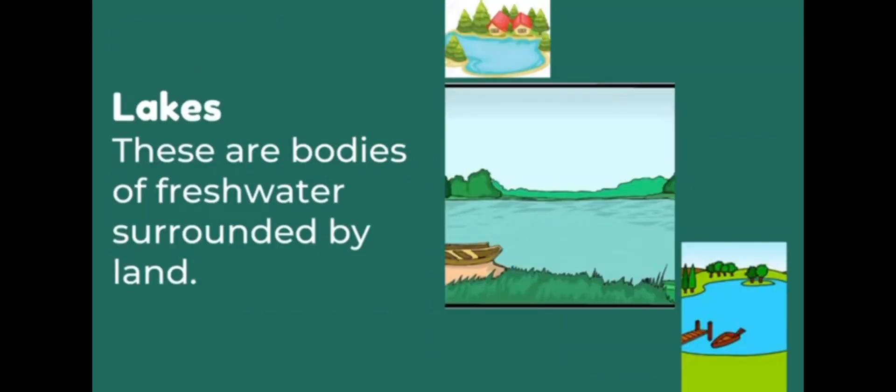The next one is lakes. These are bodies of fresh water surrounded by land. The water in lakes is fresh water — it is fit for drinking. We can drink this water.